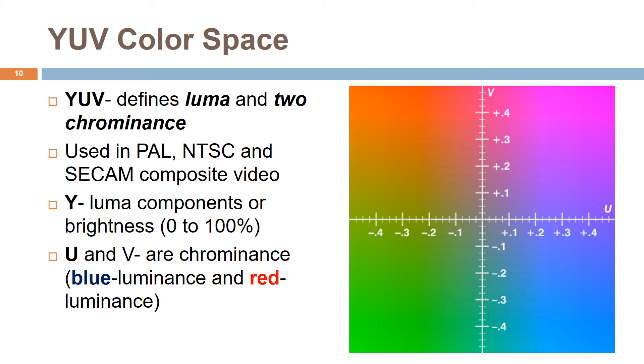YUV models human perception of color more closely than the standard RGB model used in computer graphics hardware. The YUV color space stands for Y, the luma component or the brightness, ranging from 0 to 100% in most applications. U and V are the chrominance components: blue luminance and red luminance differences components.